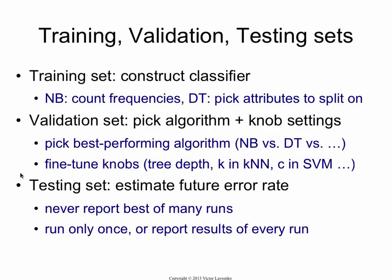If for any reason you run more than once on the test set, you usually have to report all of your results — you don't get to pick the best. And of course, the critical thing is that the best way to avoid bias in selecting these sets is to split randomly, unless you have time series data, in which case you do something different. In general, you don't split by time or by number — you split randomly.